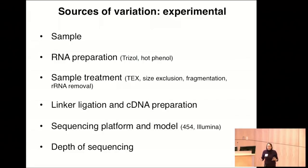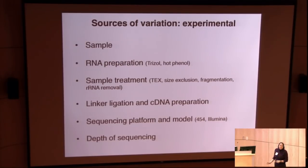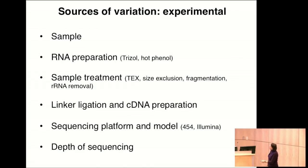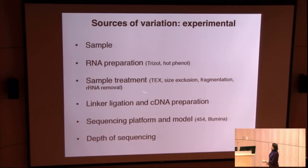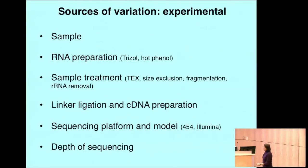It's worth considering the different sources of variation. There's experimental variation: even RNA preparation — how a lab prepares the RNA — can give pretty different results. How the sample is treated, whether it's treated with the exonuclease, how it's fragmented, the linker ligation, cDNA preparation, the sequencing platform and model, and the depth of sequencing — these are just the experimental sources of variation.